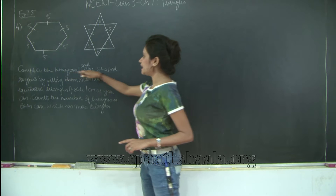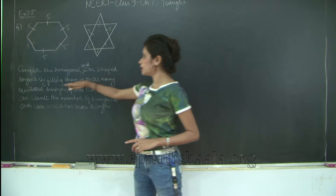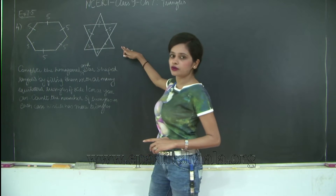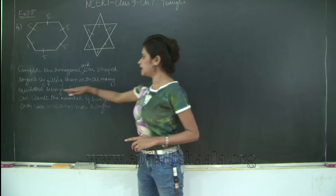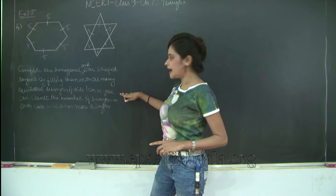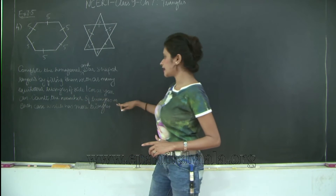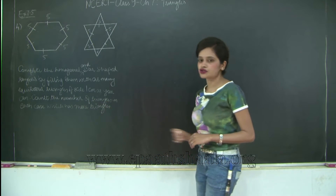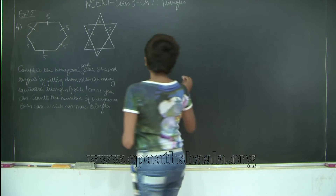So what is the question? Complete the hexagonal and star-shaped Rangolis by filling them with as many equilateral triangles of side 1 centimeter as you can. Count the number of triangles in each case, and which has more triangles? So first of all, if you take a look at your hexagonal Rangoli...